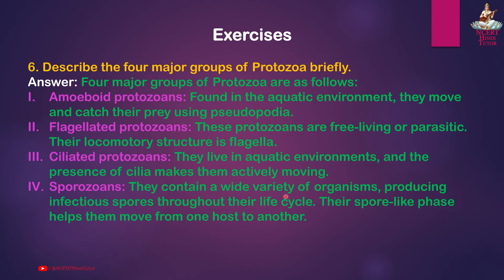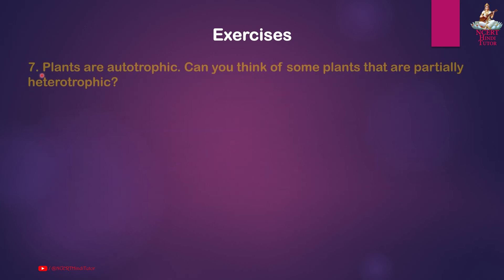Third, ciliated protozoans — they live in aquatic environments and the presence of cilia makes them actively moving. Fourth, sporozoans — they contain a wide variety of organisms producing infectious spores throughout their life cycle; their spore-like phase helps them move from one host to another.